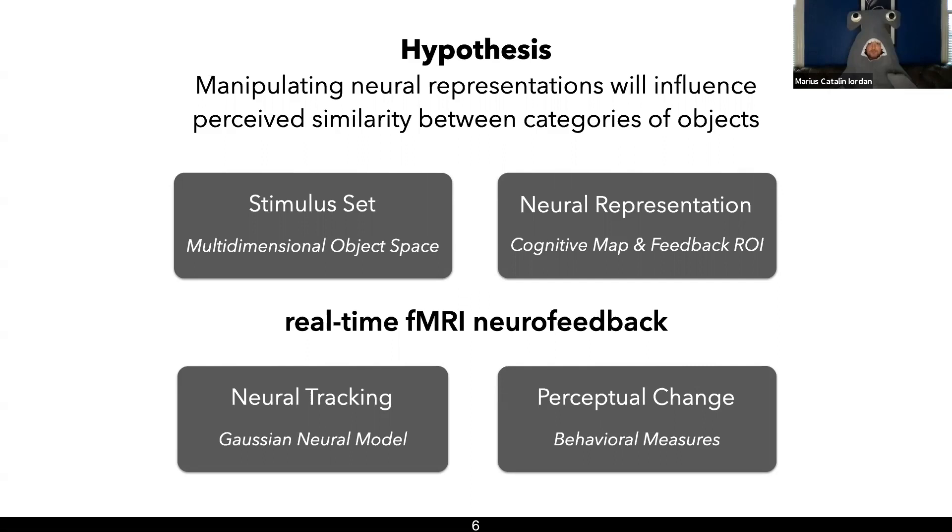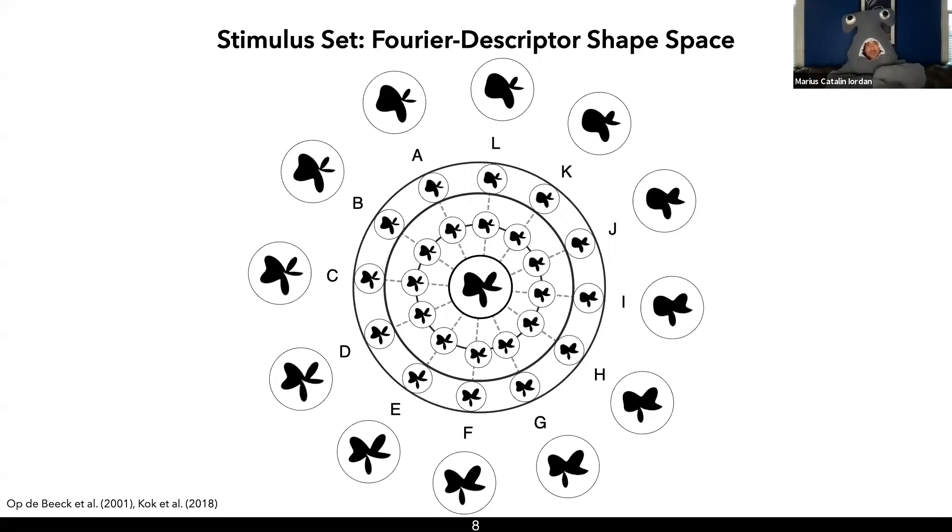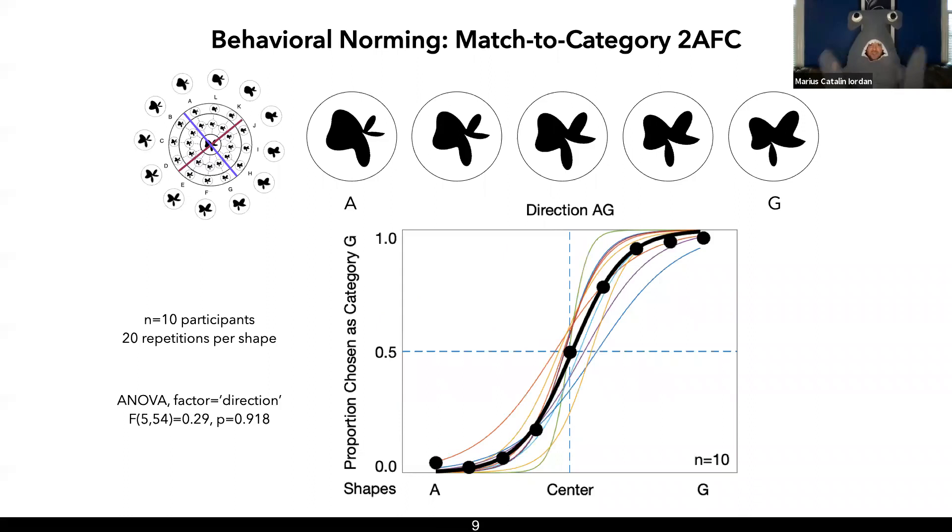So let's start with the stimulus set. We created this parametric space of artificial shapes by adding together multiple Fourier descriptors. I'm happy to chat more about this procedure during the Q&A. But for our purposes, imagine that you start with a shape that becomes the center of the space. And then you create a 2D surface of shapes that vary parametrically with distance from that center. So any two adjacent shapes are very similar, but shapes farther apart are very different. And by choosing a diameter on the circle, we can generate an arbitrary category boundary, which we can then enhance and sculpt in the brain using neural feedback, such that objects along the train direction are pulled apart neurally and potentially perceptually. We also verified that each direction in the space is perceived in a similar way, using a standard psychology match to category two-AFC behavioral test. We generated psychometric curves for categorizing shapes along each direction in the space and verified that people didn't have any biases across any of these directions in the space that we created.